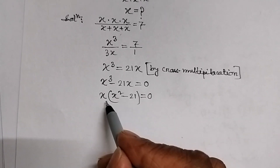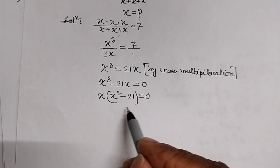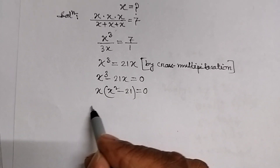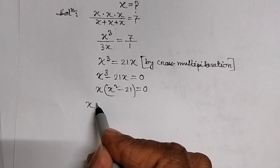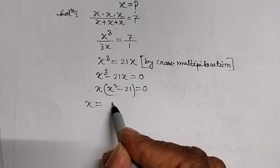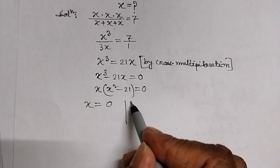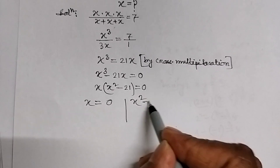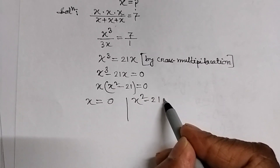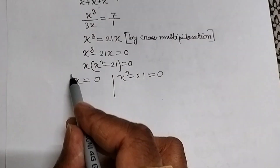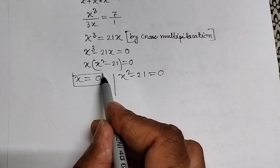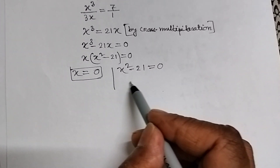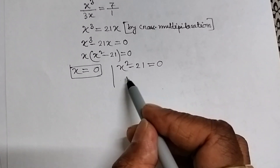Taking x common, the product of two quantities equals 0. Therefore, we have two equations: one is x equal to 0, and another equation is x square minus 21 equal to 0. Therefore, x equal to 0 is a solution of the given equation.